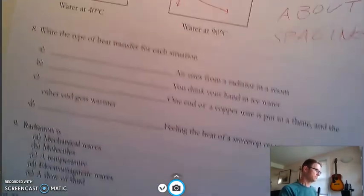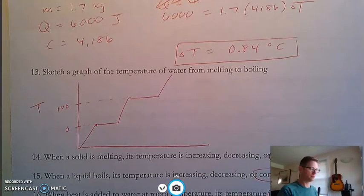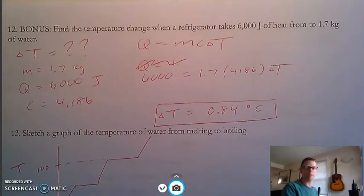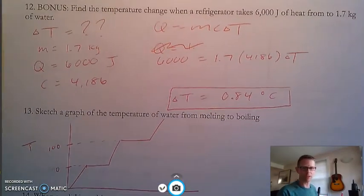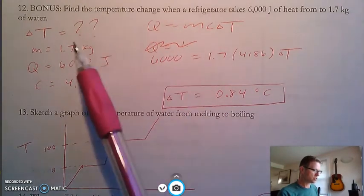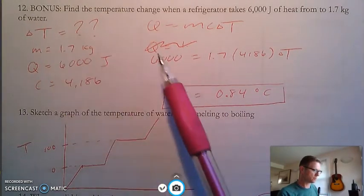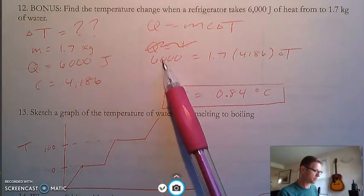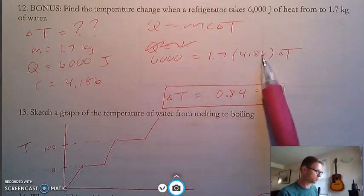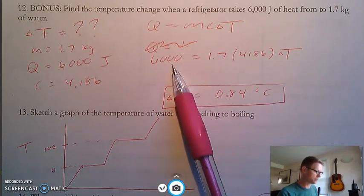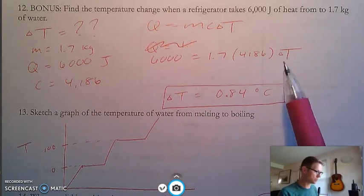This one's a bonus. I may or may not put this as the bonus on the test, but it's just the same thing, but we're solving for a different variable. So when you plug in, you actually have a number to plug in for q. You multiply these two, then you divide that number into that to get triangle t. This should look familiar from the phase change video.